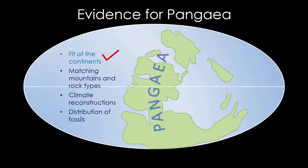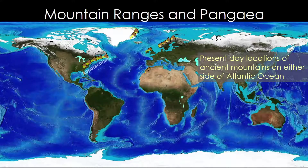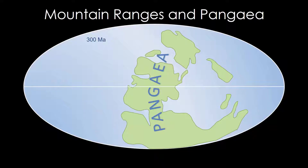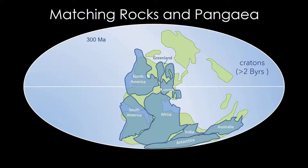So the continents fit together. Let's look at the second item on Wegener's checklist: matching mountain belts and rock types. Continents on either side of the North Atlantic Ocean have mountain ranges of similar age and structures. These include mountains such as the Appalachians in North America, the Atlas Mountains in Africa, and the Highlands in Scotland. If we take Pangaea from 300 million years ago and superimpose the modern continents, the separate mountain ranges come together to form a single chain that formed when continents collided to create the northern half of Pangaea. Looking at the distribution of ancient cratons — representing rocks older than 2 billion years — we find another match between Africa and South America.